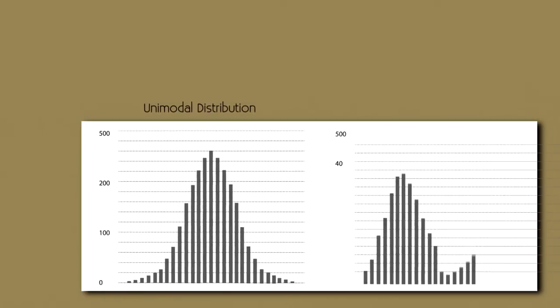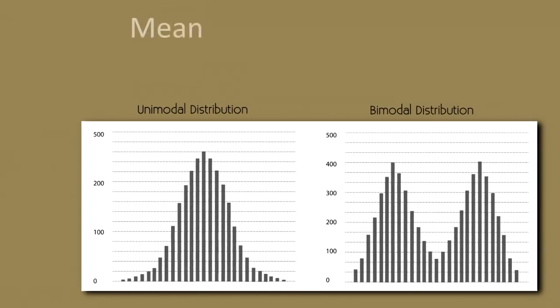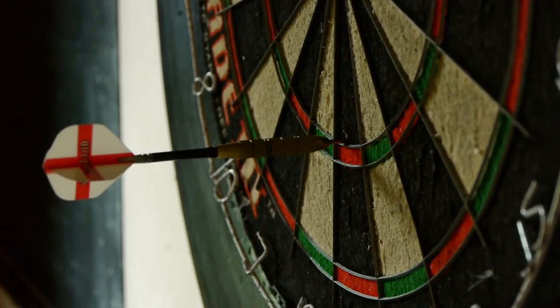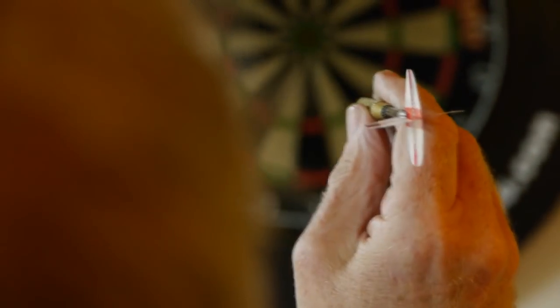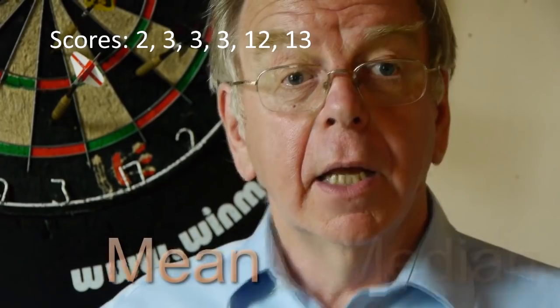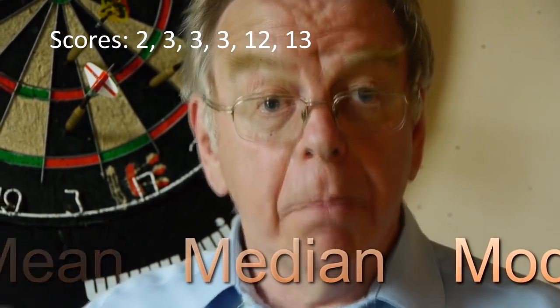The mode is a kind of average — there are three kinds of average, and each tells us something different: the mean average, the modal average, and the median average. It's easy to understand the difference, especially if you've played darts. I threw two lots of three darts, scoring a two, three threes, a twelve, and a thirteen. Now let's work out the mean, the median, and the mode.